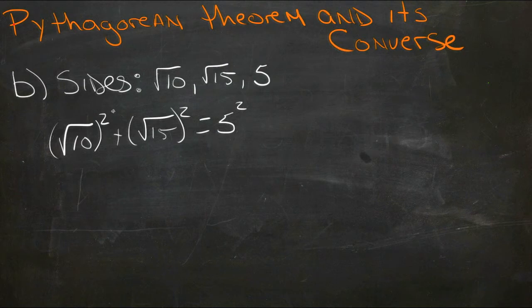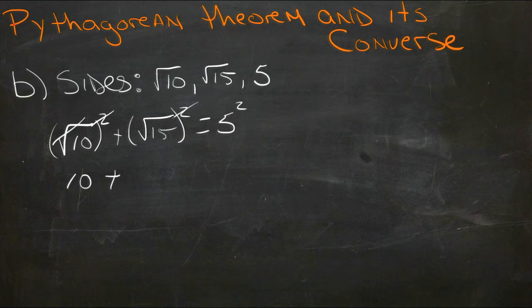Well, √10 squared, we have a square that cancels the square root, so that gives us 10, plus √15, those cancel, so we have 15, should equal 5 squared, which is 25.